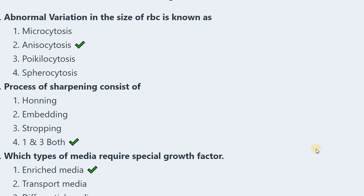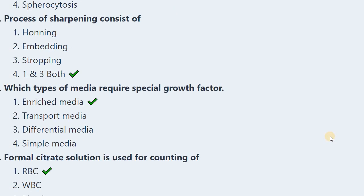Second question: The process of sharpening microtomes used in histology — honing, embedding, stropping, or both one and three? The correct answer is one and three both — honing and stropping are the processes of sharpening. Embedding is not included. If both options appear in the question, select both.